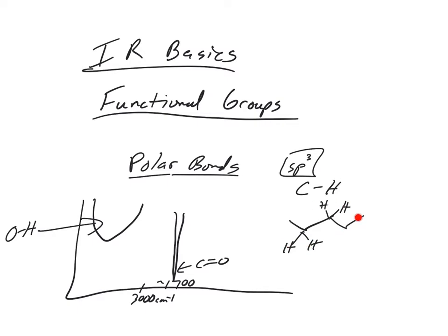They'll also show up as a pretty intense peak, sometimes as well. These SP3 CHs, SP3 hybridized CHs, not because it's polar, but because there's a lot of them. So the intensity of the IR stretches can come from polar bonds or an additive effect of lots of bonds.